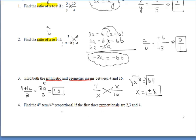For number 4, we wanted to find the 4th term or 4th proportional. So you should have set it up like that. When you cross multiply, you get x is 6.